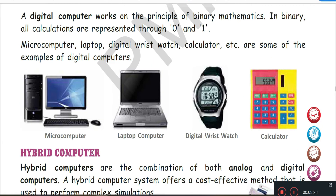Now let's see the digital computer. Digital computer works on the principle of binary mathematics. It represents 0 and 1. In higher classes you will study in depth about binary mathematics. So for now, it works on 0 and 1. Some examples: Microprocessor, Desktop computer, Laptop computer, Digital wrist watch and Calculator.